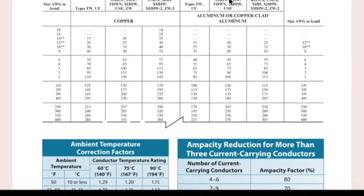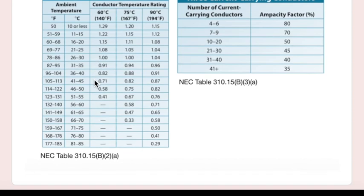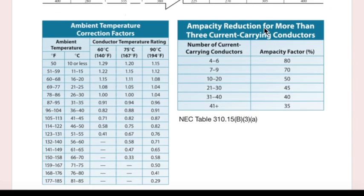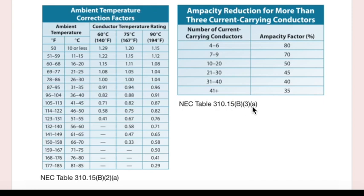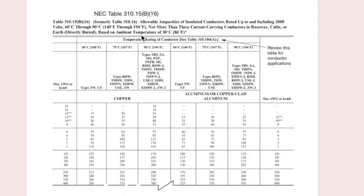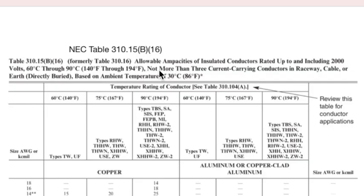Remember, these temperature ratings coincide with this ambient temperature correction factors chart, NEC Table 310-15B2A. And then our ampacity reduction because of current carrying conductors, or our adjustment factor, is 310-15B3A. So remember, we have adjustment factor, we have correction factor, and then we have our 'if the world was perfect' chart. If we had a conductor that was good up to 2,000 volts, if we had not more than three current carrying conductors, and we had an ambient temperature of 86, we would be in great shape. But we don't, so now we have to apply the adjustment factors.